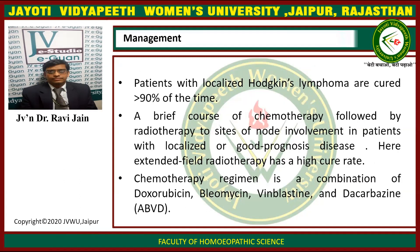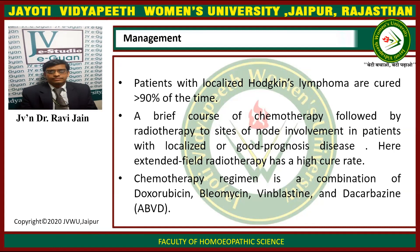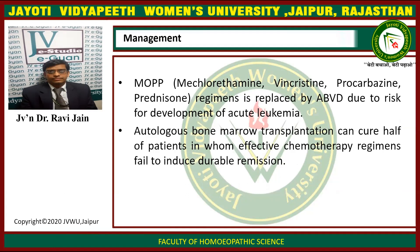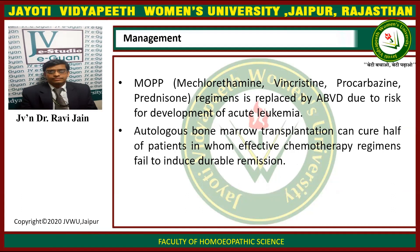Regarding management: patients with localized Hodgkin's lymphoma are cured in greater than 90% of cases. A brief course of chemotherapy is followed by radiotherapy to the sites of nodal involvement in patients with localized or good prognostic disease; extended-field radiotherapy achieves a high cure rate. The chemotherapy regimen is a combination of doxorubicin, bleomycin, vinblastine, and dacarbazine, i.e. ABVD. Autologous bone marrow transplantation can cure about half of the patients in whom effective chemotherapy regimens fail to induce durable remissions.